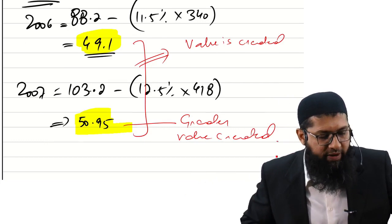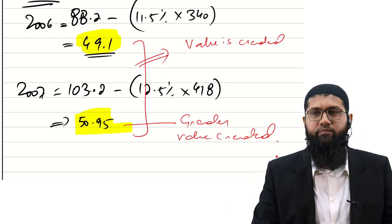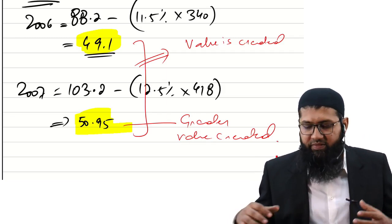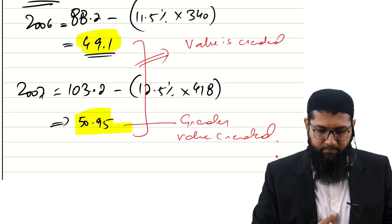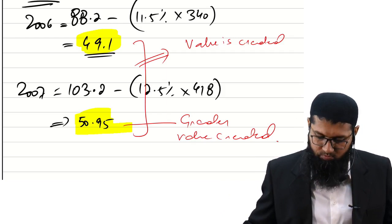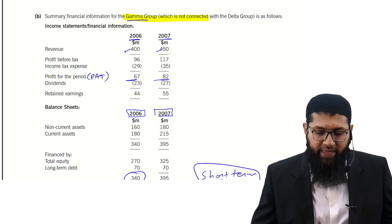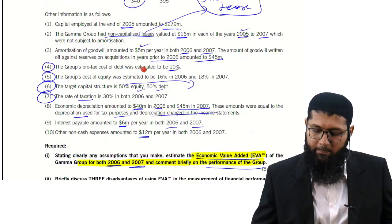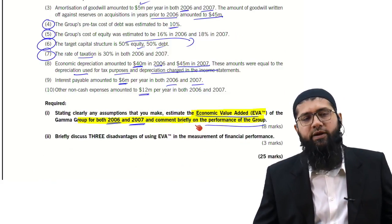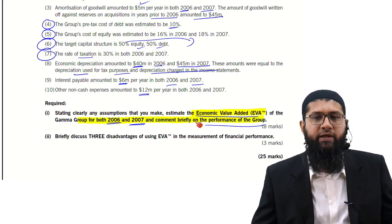Both in 2006 and 2007, value is created (positive EVA). Greater value is created in 2007. The comment required is: value has been created in both years; in one year more value was created and in the other year lesser value was created.